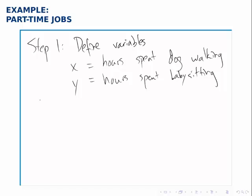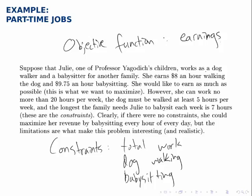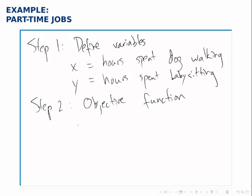Once we have the variables we can move on to step two, which is to define explicitly the objective function — to write it in terms of x and y. We need to go back to the problem statement and see what determines her earnings. We're told that she earns $8 for every hour that she walks the dog and $9.75 for every hour that she spends babysitting. Therefore her total earnings from dog walking will be 8 times however many hours she spends doing that, and her total earnings from babysitting will be $9.75 times however many hours she spends doing that. Her earnings, which I'll call p for profit, will equal 8x plus $9.75y.